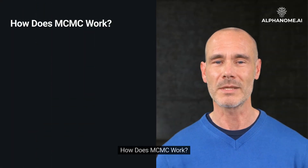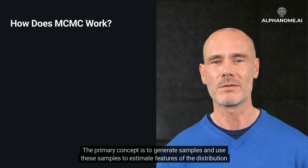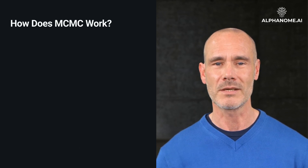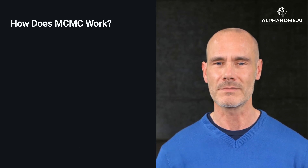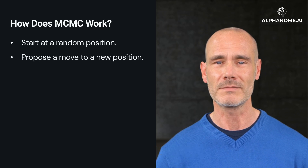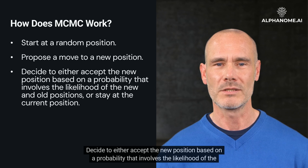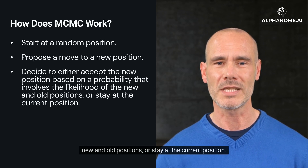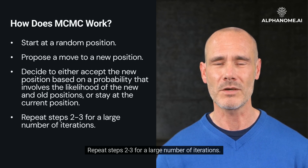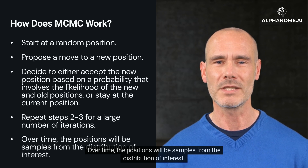How does MCMC work? The primary concept is to generate samples and use these samples to estimate features of the distribution of interest, like its mean or variance. The steps generally followed are: start at a random position; propose a move to a new position; decide to either accept the new position based on a probability that involves the likelihood of the new and old positions, or stay at the current position; repeat steps 2 to 3 for a large number of iterations. Over time, the positions will be samples from the distribution of interest.